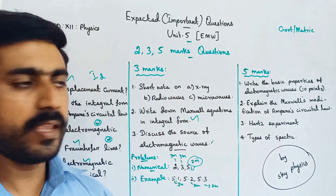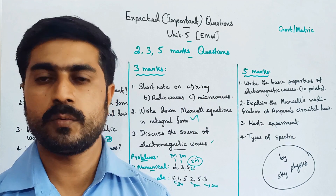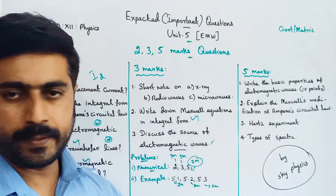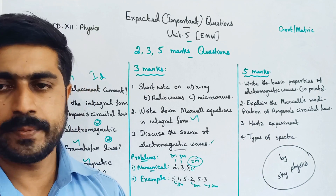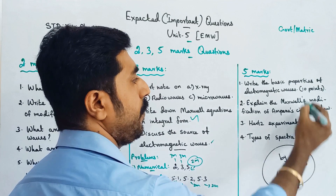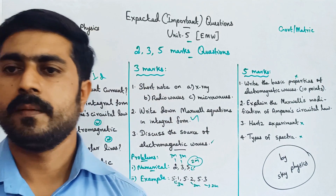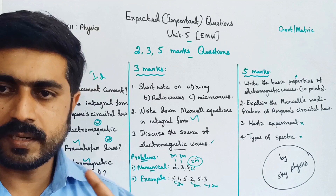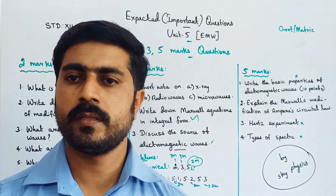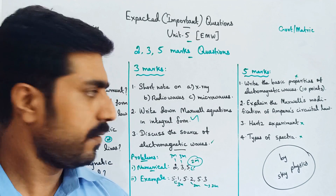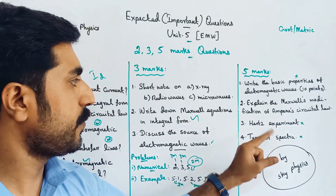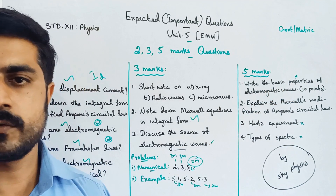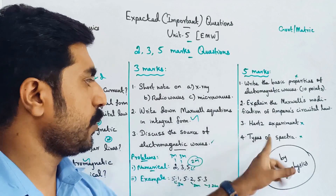Also for 5 marks: Maxwell's Modification of Ampere's Circuit, displacement current term, Hertz's Experiment, and types of spectra — emission spectra and absorption spectra. These are important topics from previous years. Types of spectra and Hertz's Experiment are the next key 5-mark topics, along with the basic properties of electromagnetic waves.